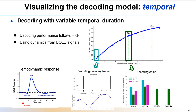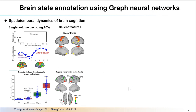From the temporal domain, we also found that the model generally follows the shape of a hemodynamic response function, with a variable peak around 6 seconds after the task onset. We confirmed this pattern by using variable temporal durations, ranging from a single frame as short as 1 second to longer durations such as 6 seconds and 10 seconds. In summary, we built the GNN-based decoding model that captures the spatial-temporal dynamics of brain cognition, extracts biologically meaningful features under specific tasks, and achieves high decoding accuracy even at a single frame.